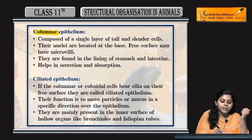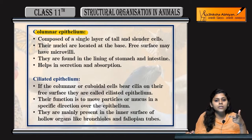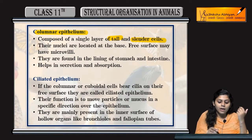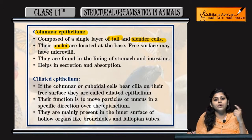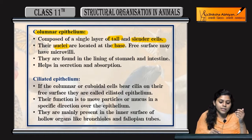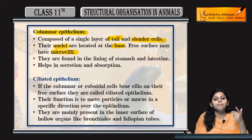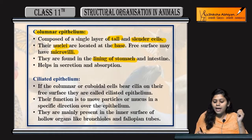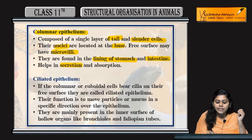Coming to columnar epithelium — these are tall, cylindrical, column-like cells. The nuclei are present at the base. The free surface may bear microvilli. They are found lining the stomach and intestine, and help in secretion and absorption.